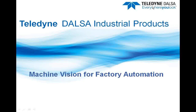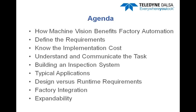Thanks, Maureen. The intent of today's discussion is to provide an overview of the various areas we need to consider when applying machine vision. These benefits include the benefits of machine vision to the automation of today's manufacturing processes, and what things need to be identified when defining these requirements. We'll discuss the importance of determining implementation costs and how to understand and communicate the task of the vision system. From there, we'll address the components typically required in building an inspection system, and depending on the application, runtime requirements may vary from design requirements. We'll also discuss options for integrating these systems with the factory, as well as options for future expansion.